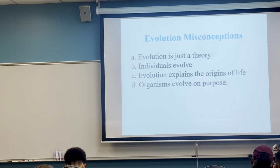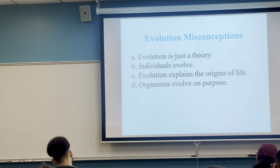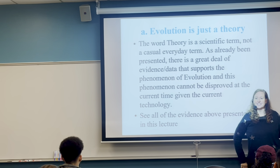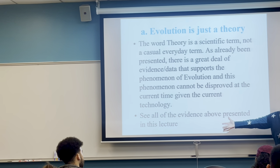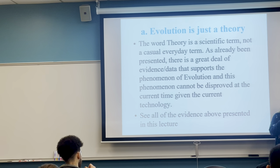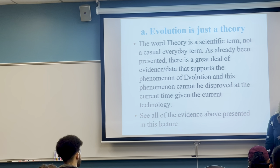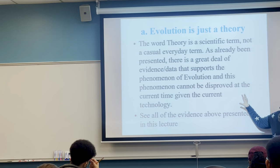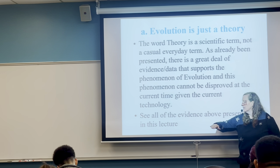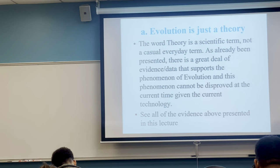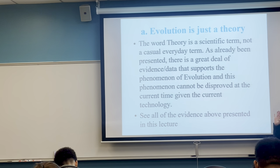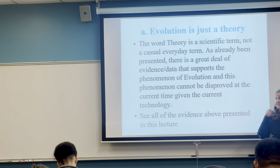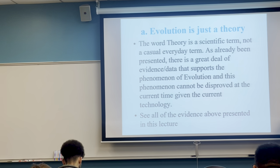Some misconceptions about evolution. First: evolution is just a theory. A theory means the wide scientific community has tons of studies and data all coming to the same conclusion. There are two major parts of evolution: the hypothesis of how life started, and the theory part — all the data showing organisms change over long periods of time. The better adapted you are, the easier time you have surviving and passing on your genes.